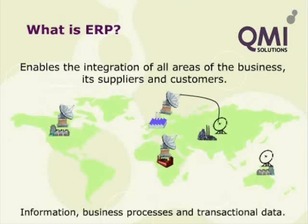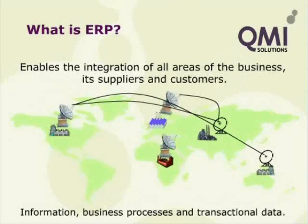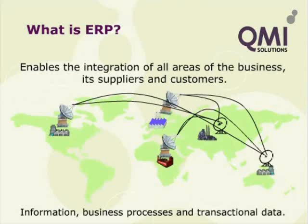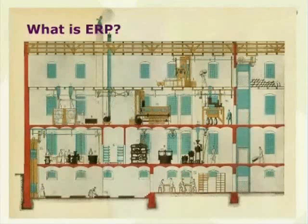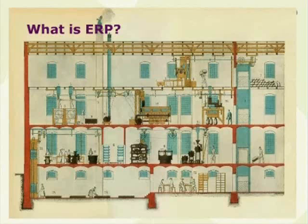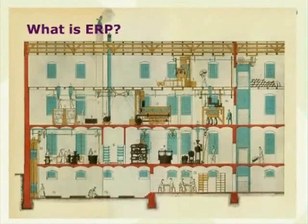ERP systems are packaged business software that allow a company to automate and integrate the majority of its business processes, including financials, planning, scheduling, capacity, inventory, order processing, purchasing, invoicing and debtors. ERP shares common data and practices across the entire organisation and produces and accesses information in a real-time environment.